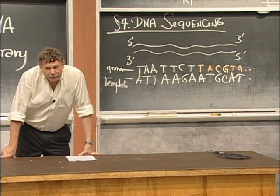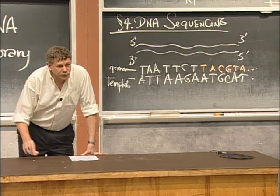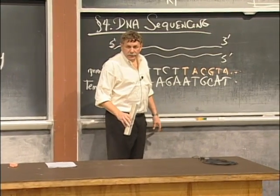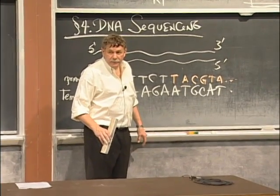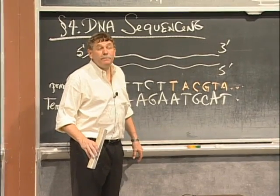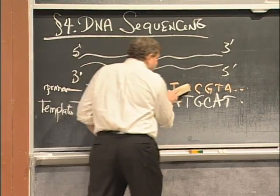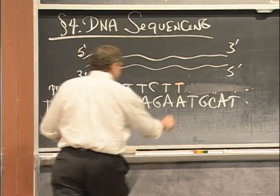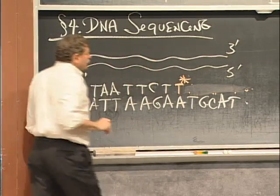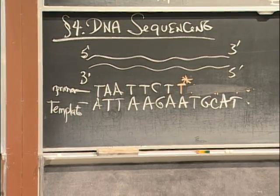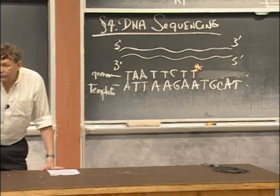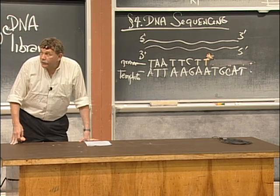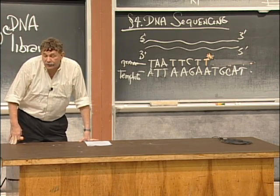But someone had a clever trick. The clever trick is this. Suppose I threw in a smidgen of defective T's, T's that couldn't be extended for some reason. I'll call that T star. What happens if a defective T goes in there? Can't be extended anymore. And what happens then to my reaction? It comes to a halt.